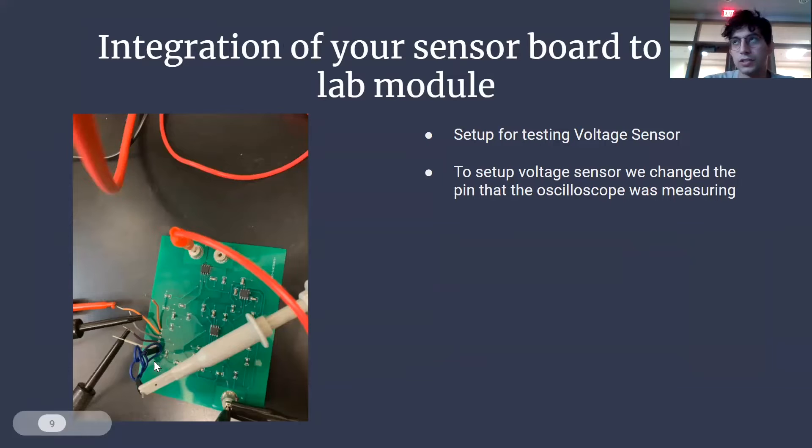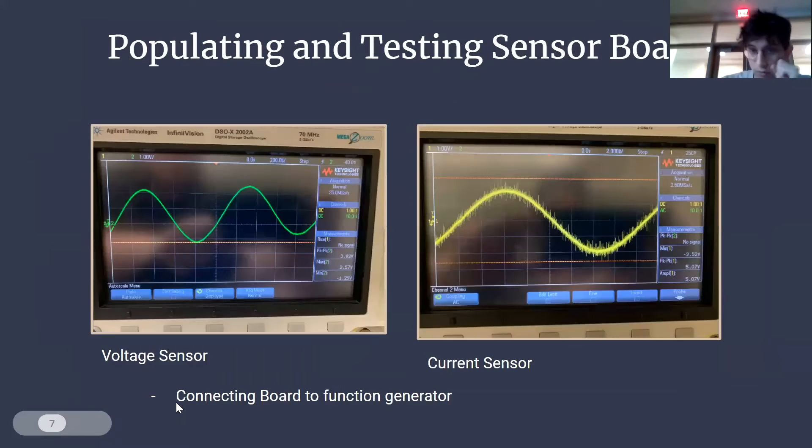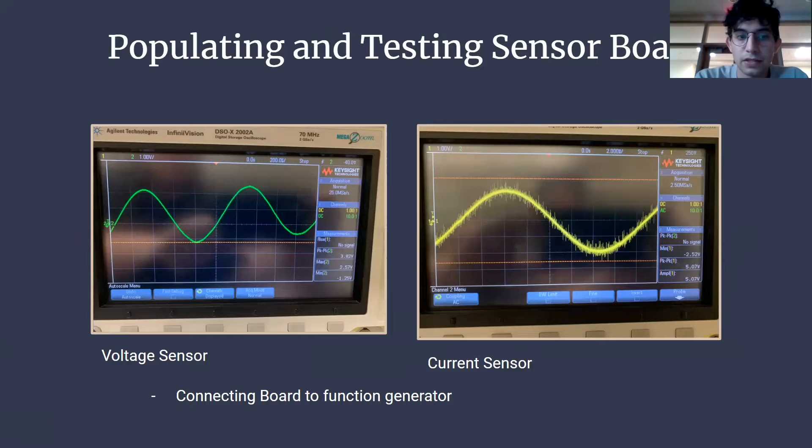To do current sensor next, we just moved this oscilloscope probe to this top wire over here. And what we got was what we expected. What our function generator was producing was coming through to our board, so we knew all our paths were correct. We didn't have to actually check resistors or capacitors or anything. We knew that there was a valid path, no short, which let us move on to actually messing with the console.